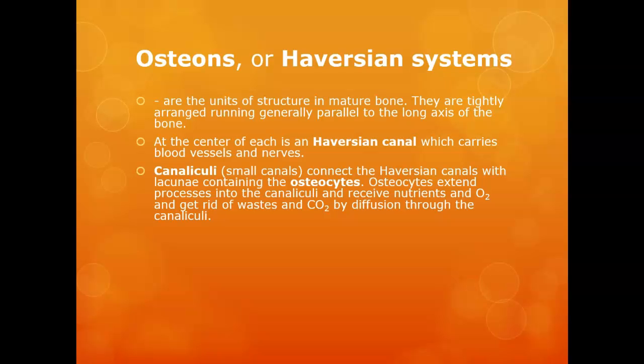The cells are located in lacunae, and branching out between these spaces are little canals called canaliculi. It's through these that the osteocytes extend their cell membranes and touch the next cell through a gap junction — that's how nutrients and waste are moved through the bone. Bone is a living tissue; it's very much alive.